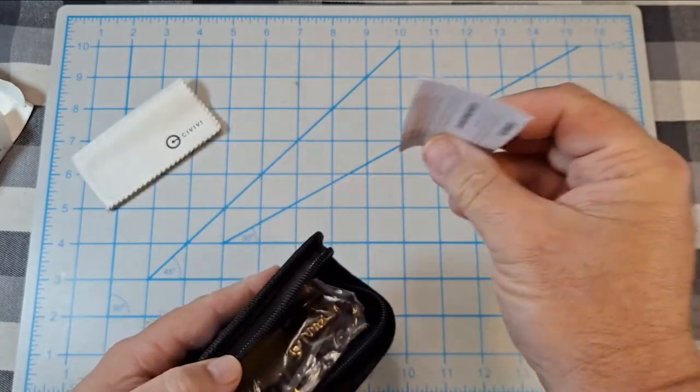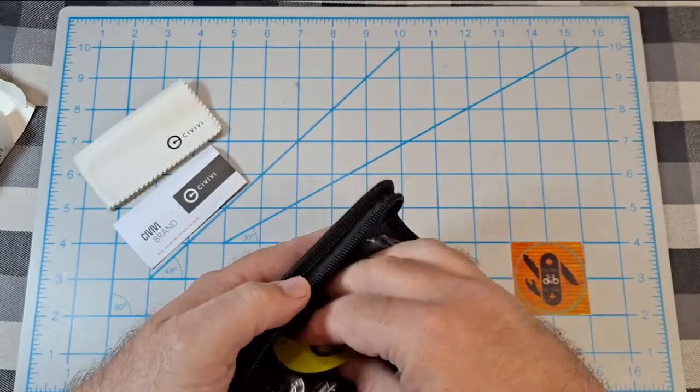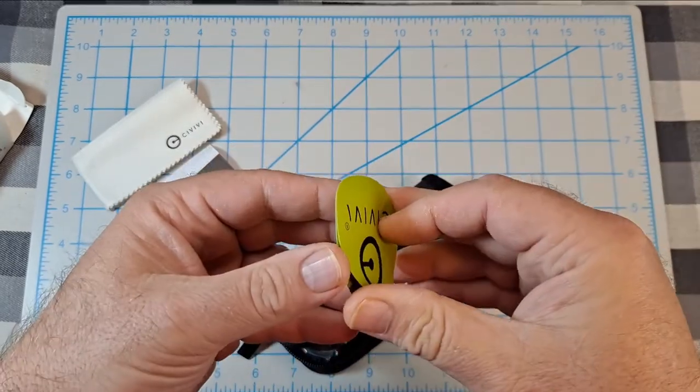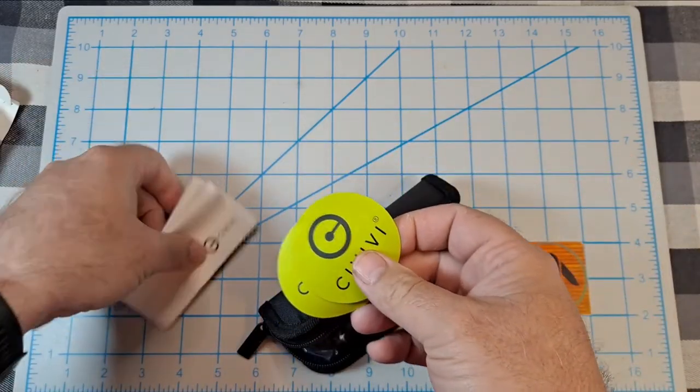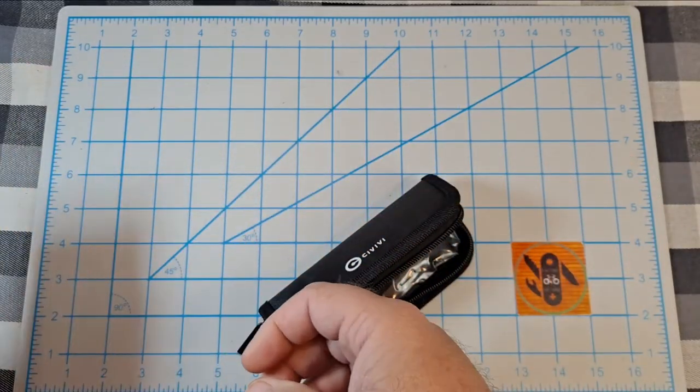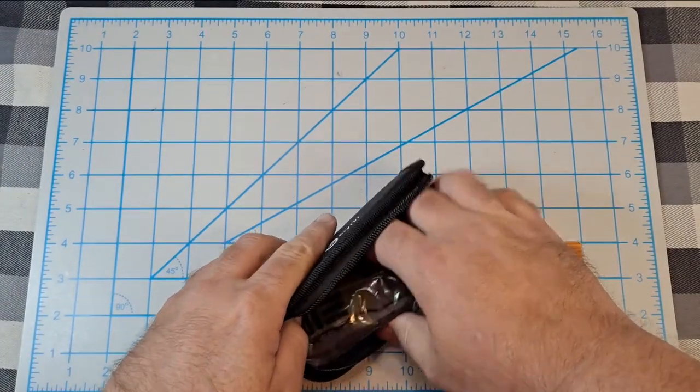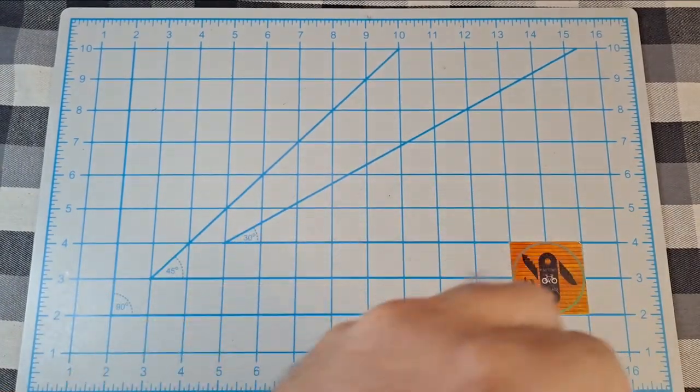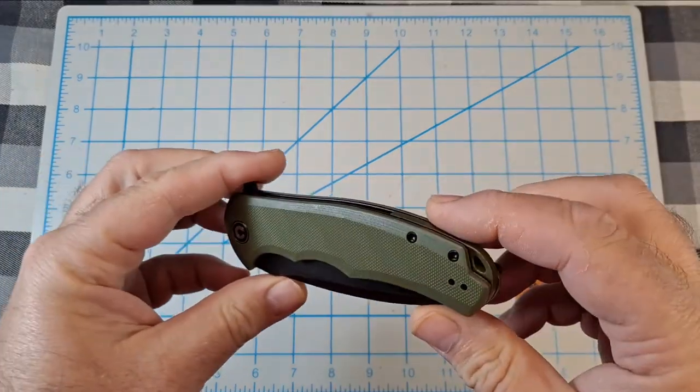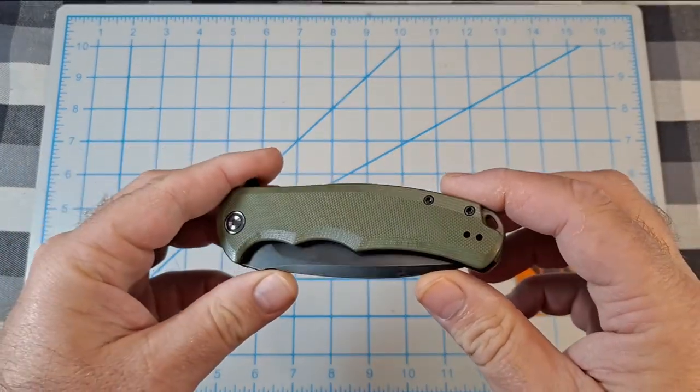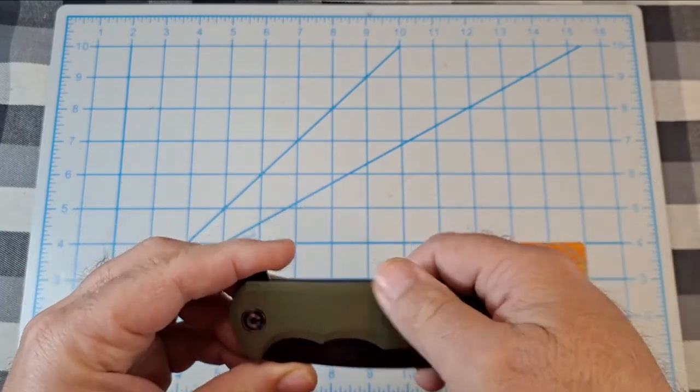We all know what's in here - you get the pouch, the cleaning cloth, you get paperwork, get a couple of stickers. This has new stickers in it which I kind of like. Let's get this thing out.